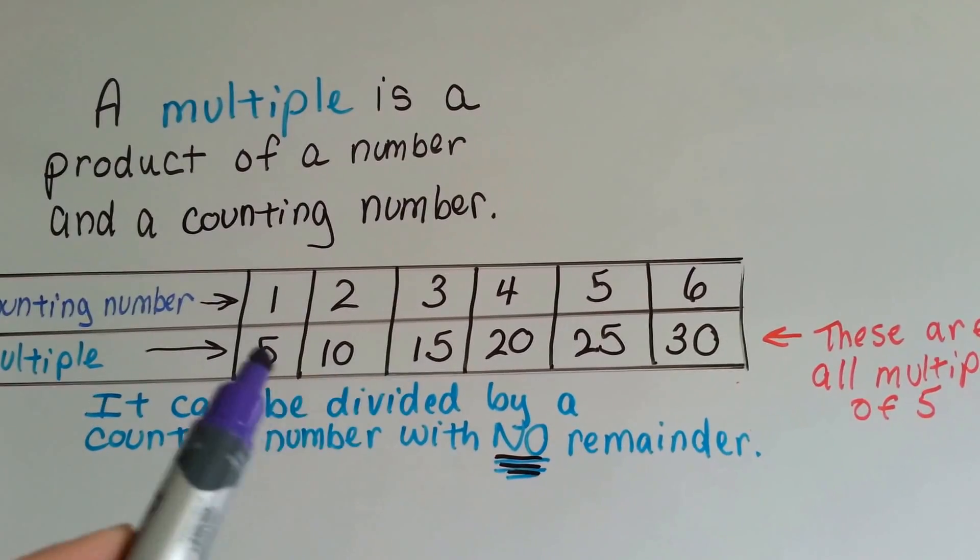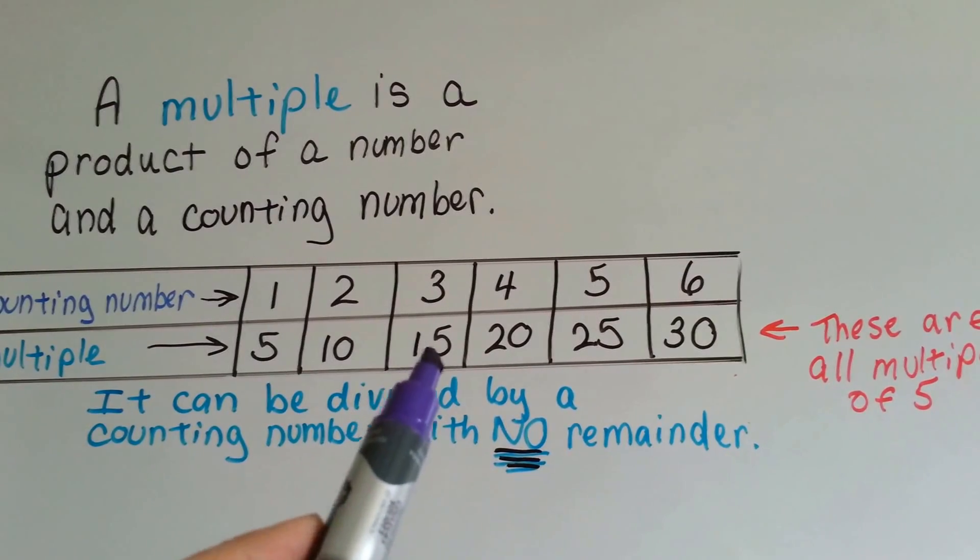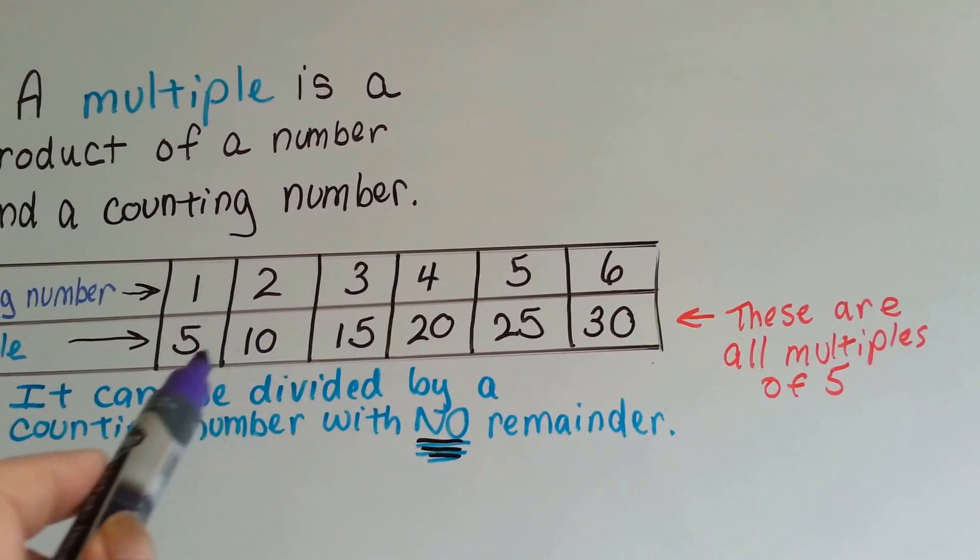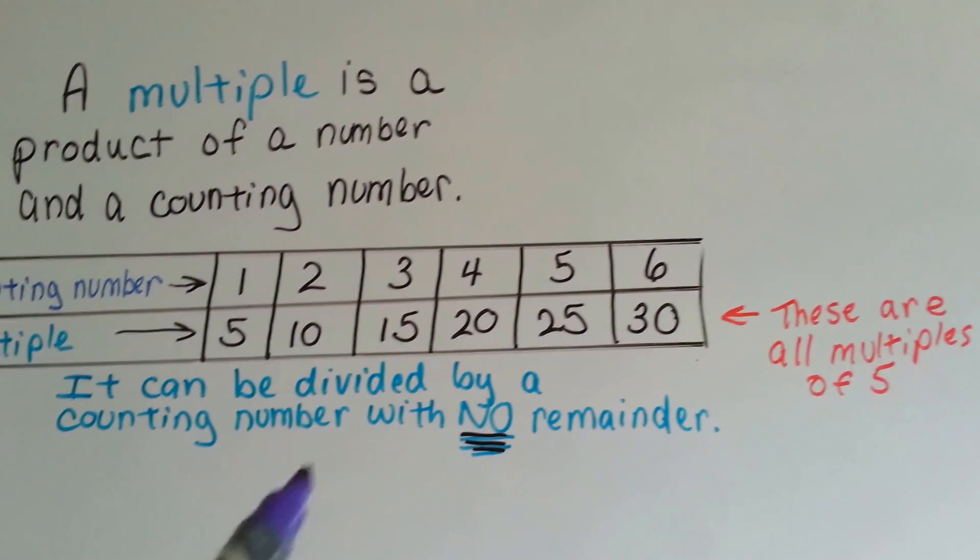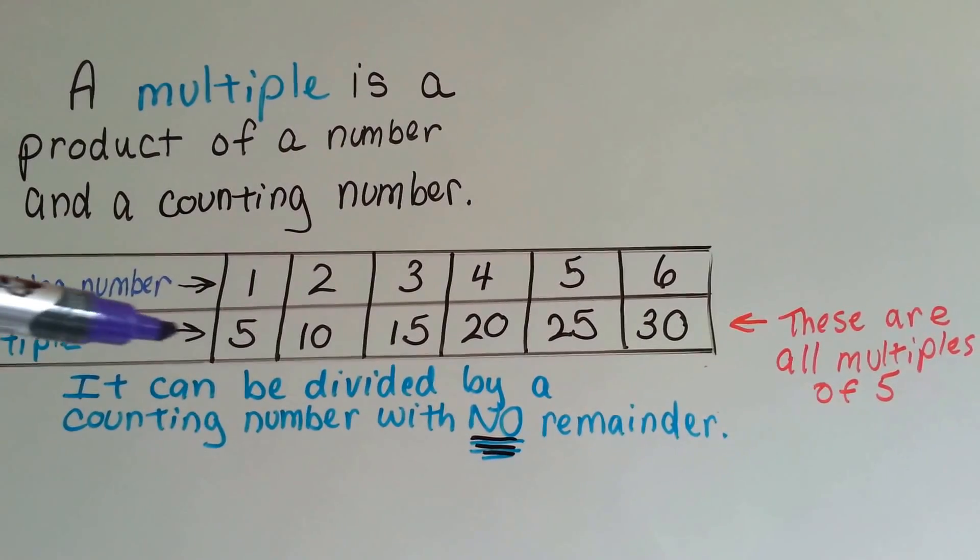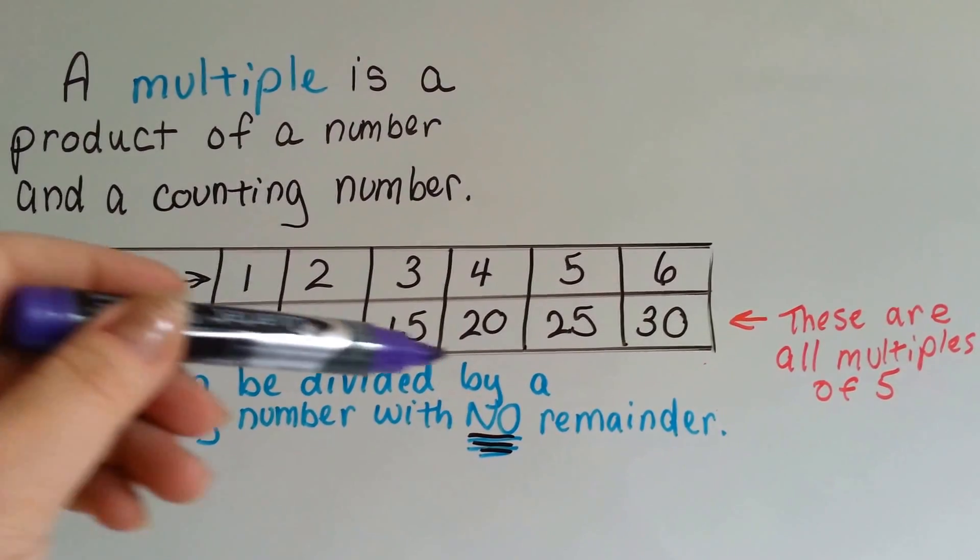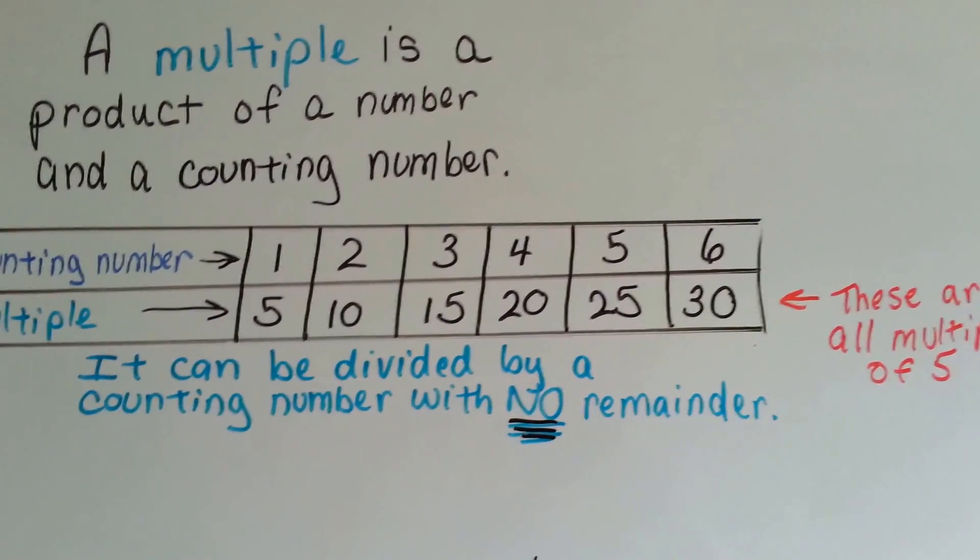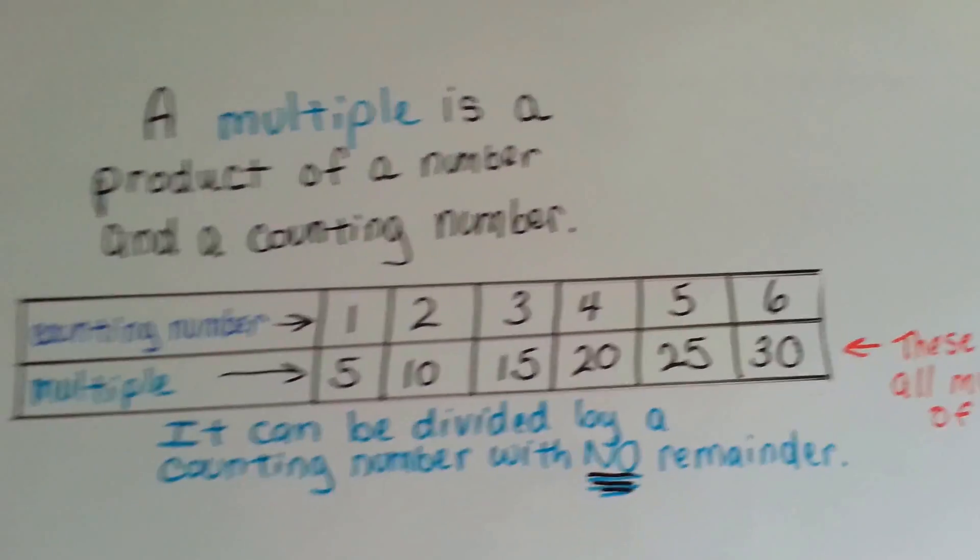So if you had 3 fives, you'd have 15. If you had 6, you'd have 30. So these are all multiples of 5, this bottom row here, and they can be divided by a counting number with no remainder. So these can all be divided by 5 and not have a remainder. See? So we can estimate with those multiples.